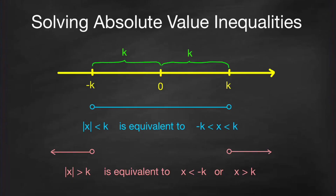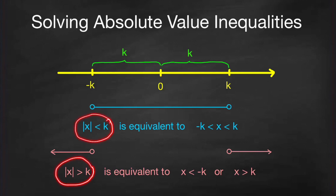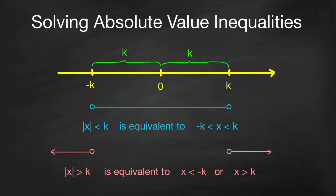In this video, I'm going to show you how to solve inequalities with absolute value, such as absolute value of x less than k, absolute value of x less than or equal to k, absolute value of x greater than k, or absolute value of x greater than or equal to k. The expression inside the absolute value bars is not necessarily equal to x — it can be 2x minus 1, or 1 plus x all over 3, and so on. We can easily solve these if we know the geometric interpretation of absolute value and how to solve inequalities without absolute values.